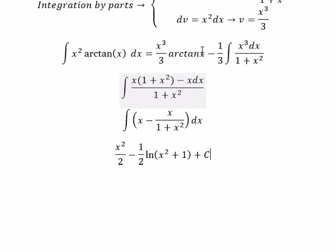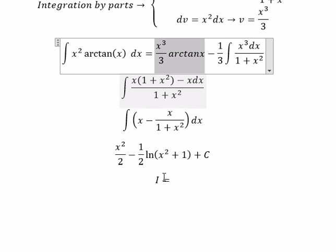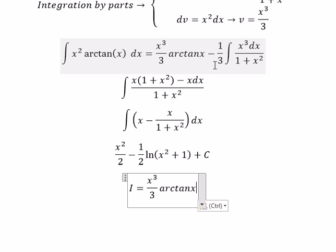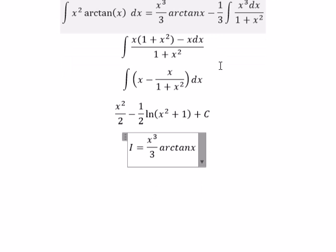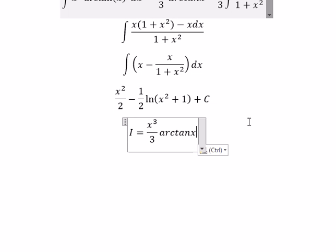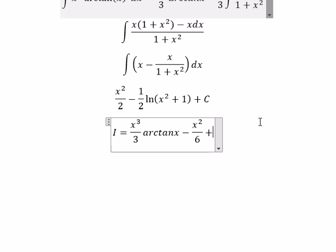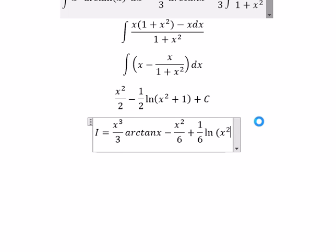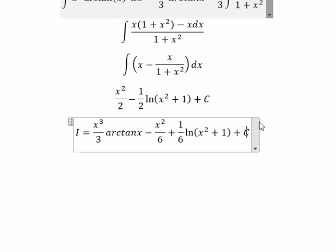Now we need to combine this one. So we have negative 1 over 3, we multiply with this one. And you will get negative x to the power of 2 over 6 plus 1 over 6 multiplied with ln of x square plus 1. And we have c as the constant.